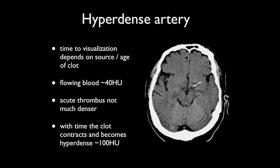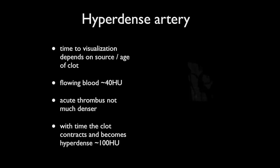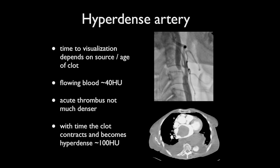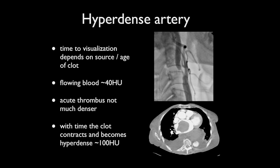Fortunately, the majority of ischemic strokes are due to thromboembolism caused by clot forming either in the carotids or within the heart. As such, the clot that eventually embolizes and occludes the intracranial circulation has been present for some time and is significantly hyperdense.